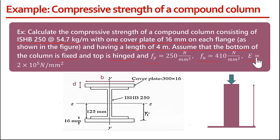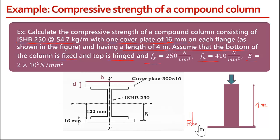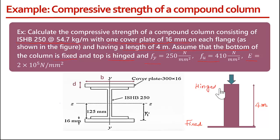This is the column and its length is 4 meters. The bottom end is fixed and the top end is hinged. If you make a cross section at any place, this column cross section will look something like this.